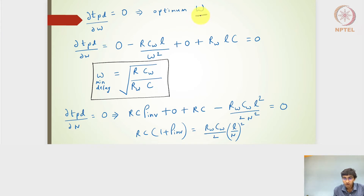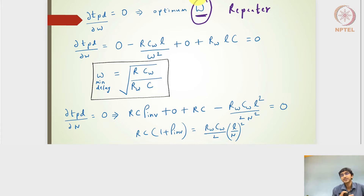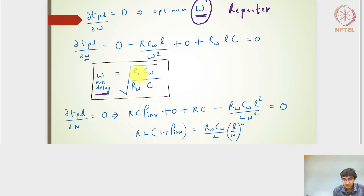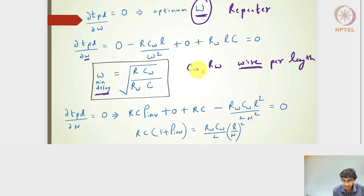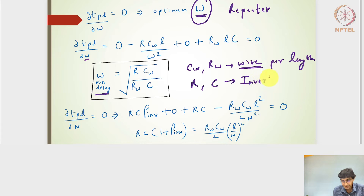Let's identify the optimum w — the optimum scaling of the repeater (not the width of the wire). By differentiating the delay expression with respect to w and equating to zero, the optimum w for minimum delay turns out to be the square root of r·cw divided by rw·c, where cw and rw are the wire capacitance and resistance per unit length, and r and c are the switching resistance and capacitance of the unit inverter.